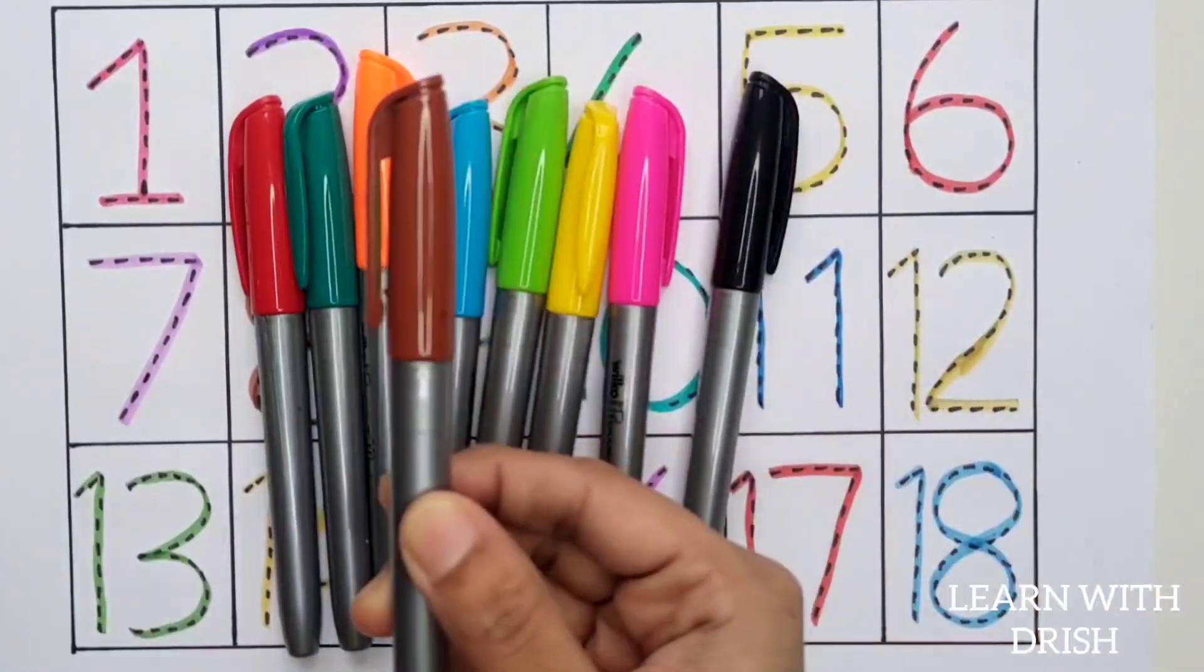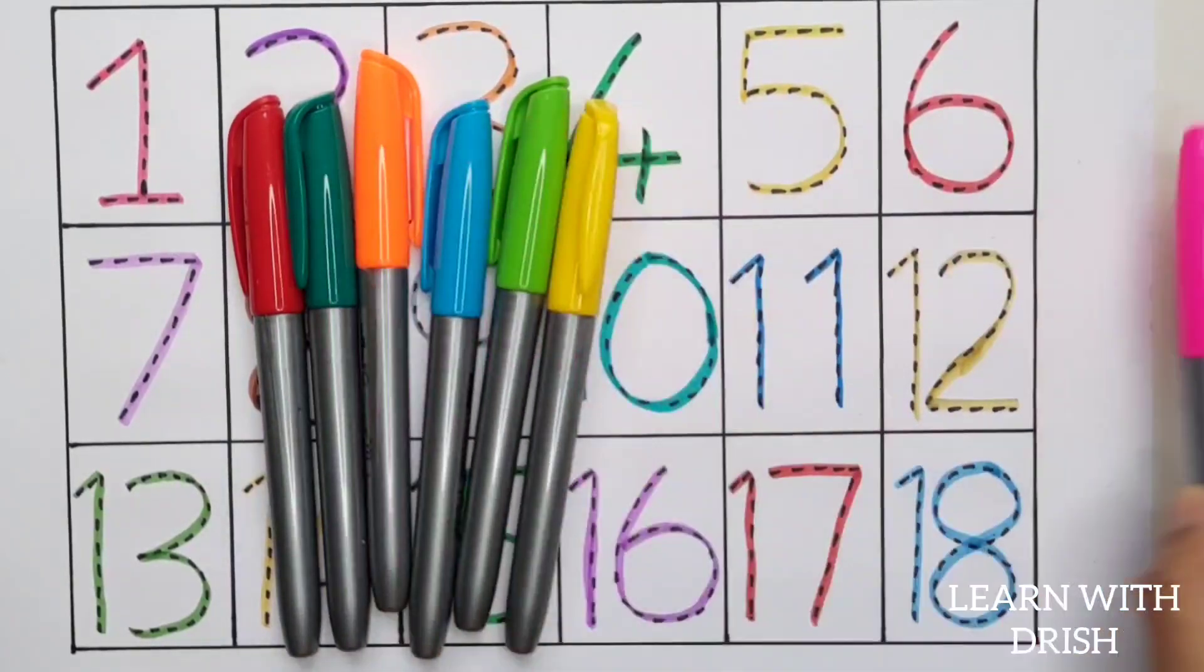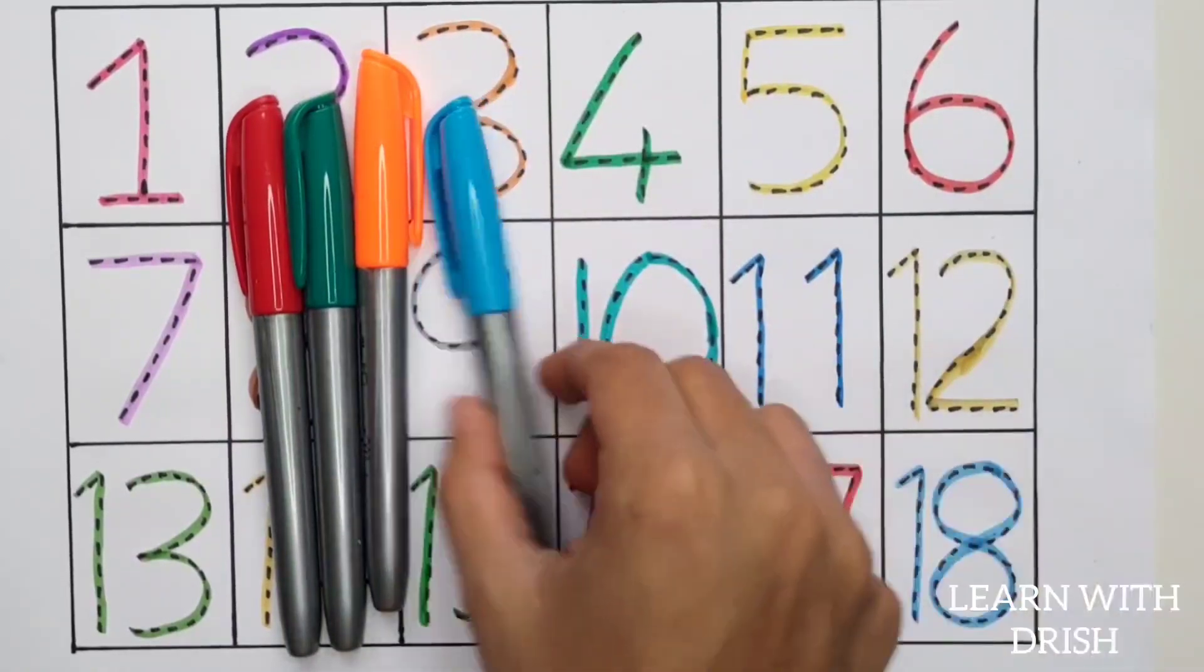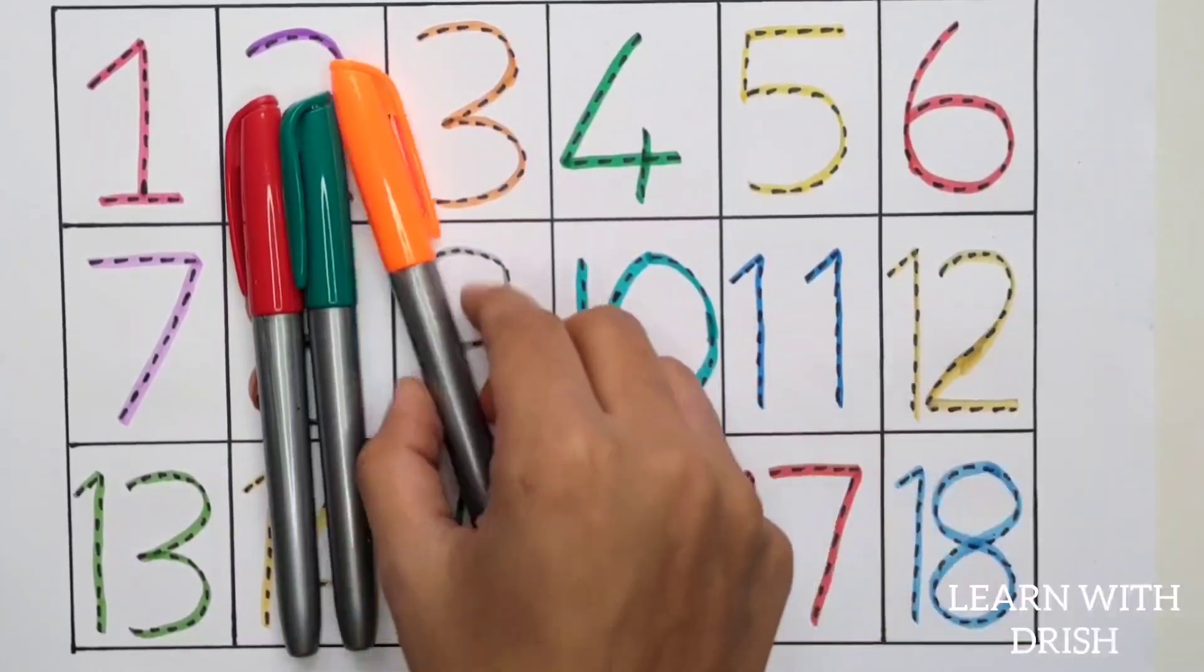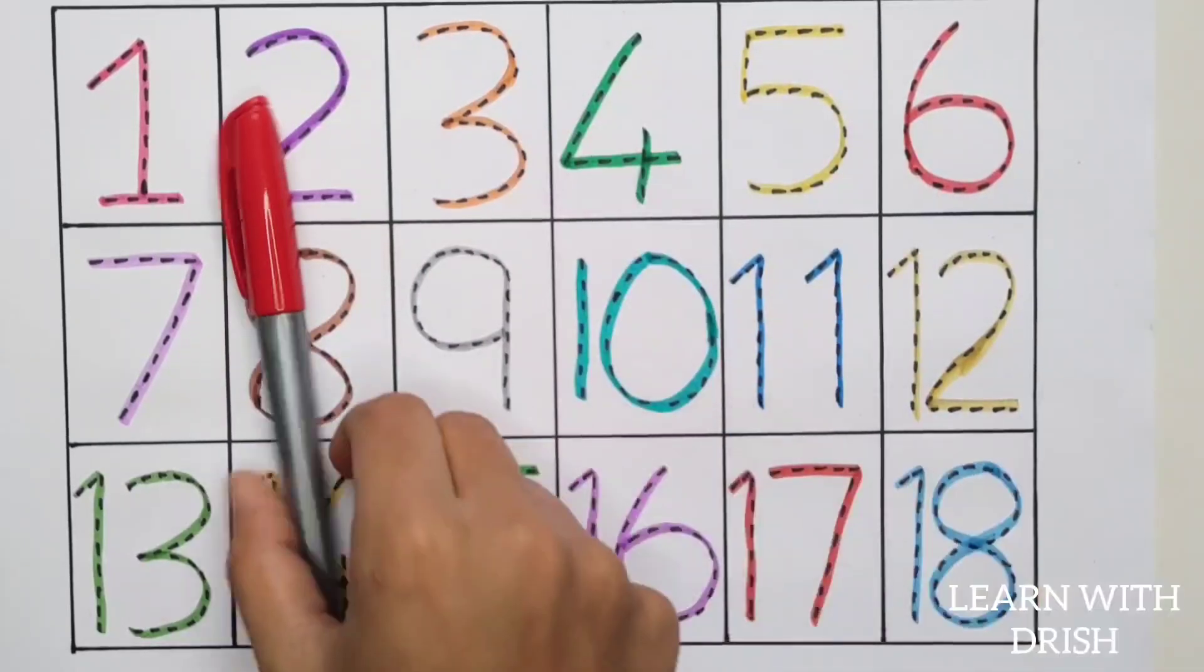Brown color. Black color. Pink color. Yellow color. Green color. Blue color. Orange color. Dark green. Red color.